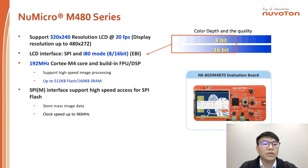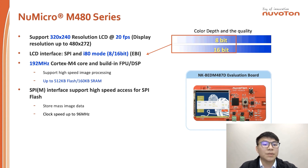The Nuvoton M4 series is based on the Cortex-M4 core, supporting 320x240 resolution display. There are three key points about the M480 series. First, the 192 MHz core speed shortens image processing time. Second, SPIM supports high-speed SPI flash access, with SPI clock speed up to 96 MHz and 4-bit mode support. SPIM is used to transfer a large number of images to the panel quickly.